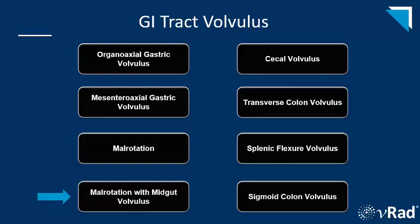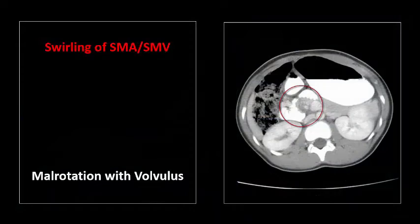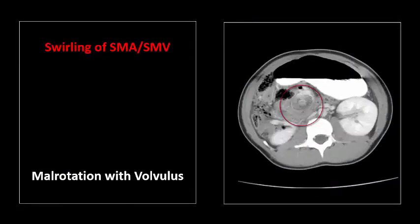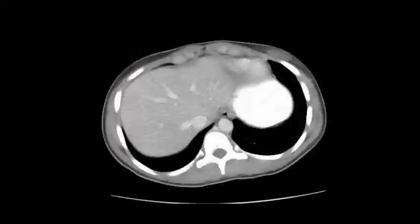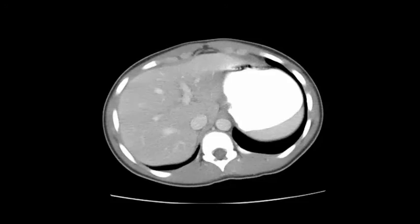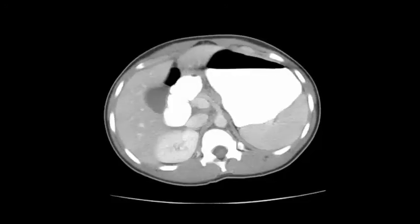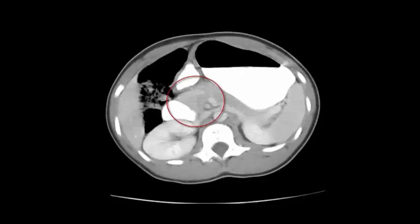The next case is a congenital malrotation complicated by midgut volvulus. Note the swirling of the SMA and SMV around each other, and also the swirling of the duodenum and jejunum around each other in the right upper quadrant. Here's a short cine loop focusing on the right upper quadrant where we see the duodenum and jejunum twisting around each other, compatible with malrotation complicated by midgut volvulus.